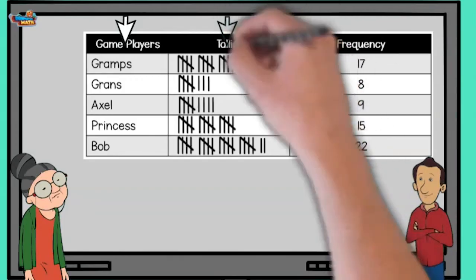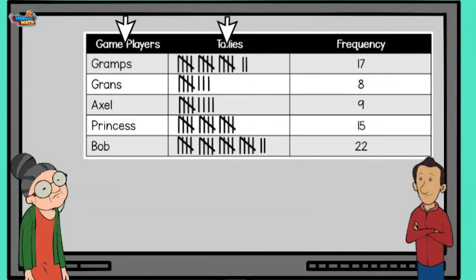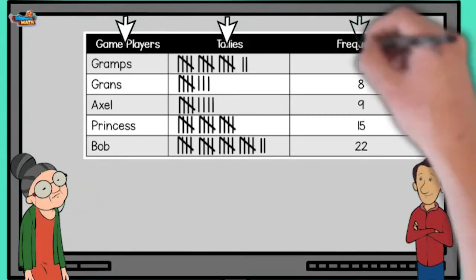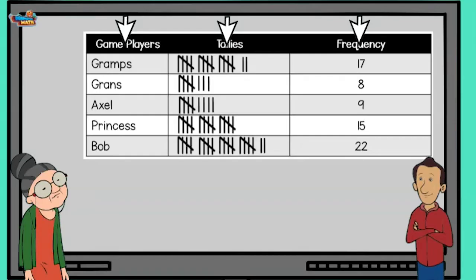This column shows us tally marks. Each tally represents the amount of times each person won the game. The frequency column of the chart tells us how many tallies are in each box.